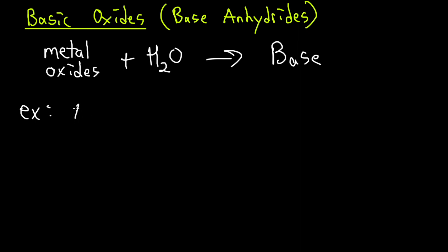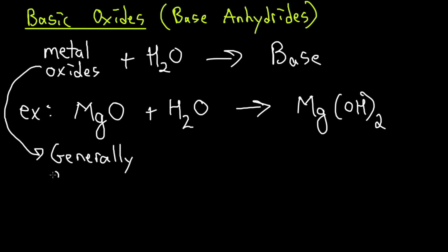Metal oxides are generally going to be the metals that will bond with oxygen from groups one and group two. So your alkali metals and alkali earth metals are going to be the ones that will exhibit these properties.